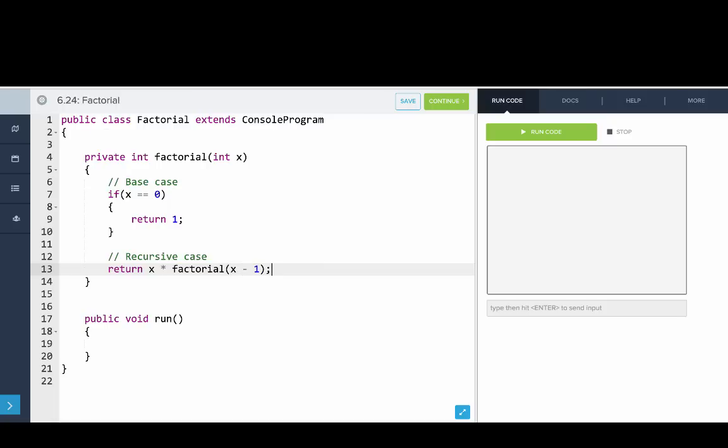So why is this working? We have a base case and then here we're making the problem one step smaller. If we assume that we have the answer of factorial of x minus 1, all we need to do to get factorial of x is just multiply by x.